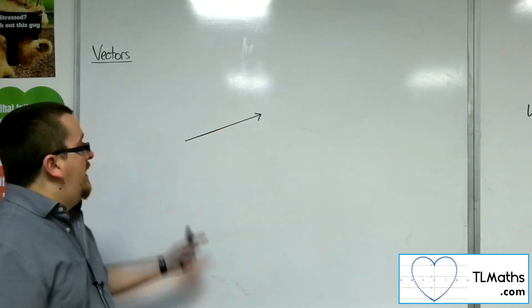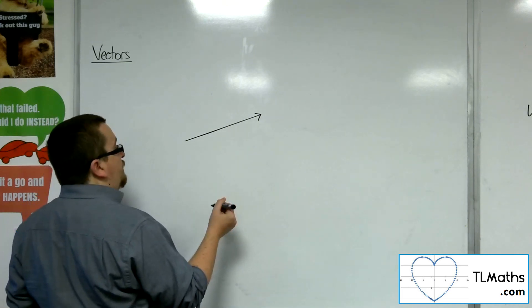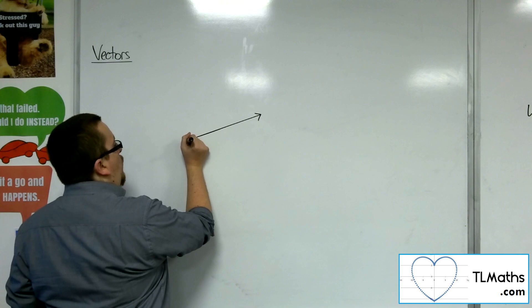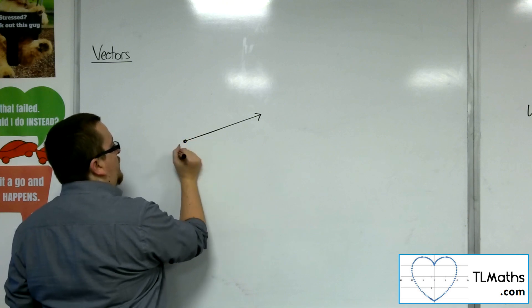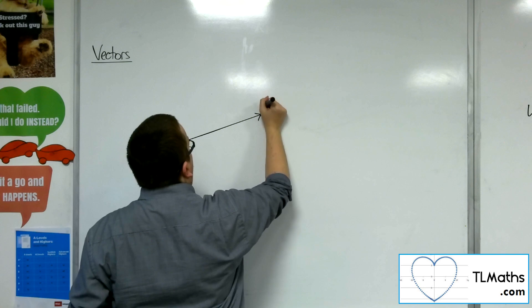So if this was my vector, for example, and it was travelling from one point here, let's call that point A, and I'm going up to this point, and this point is B.